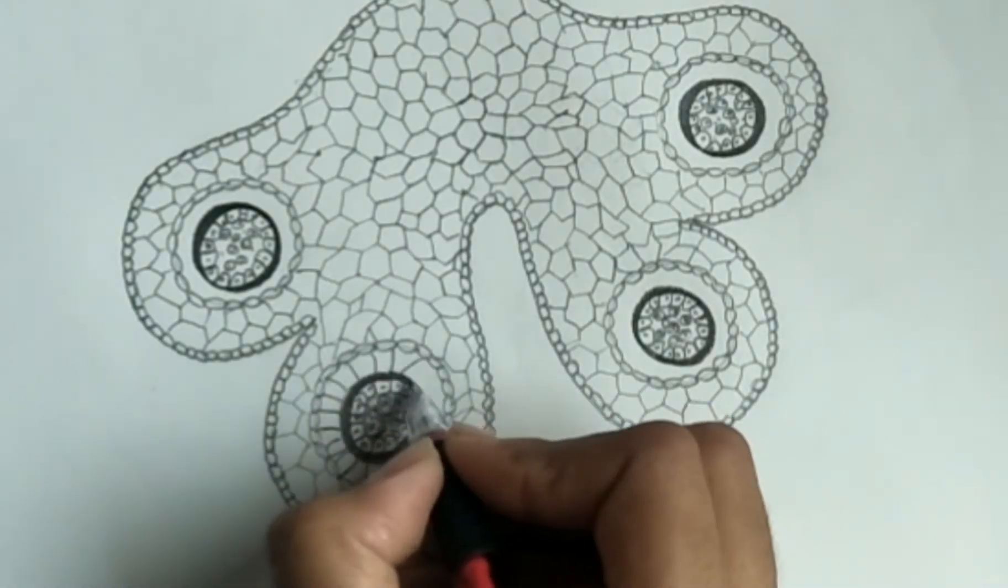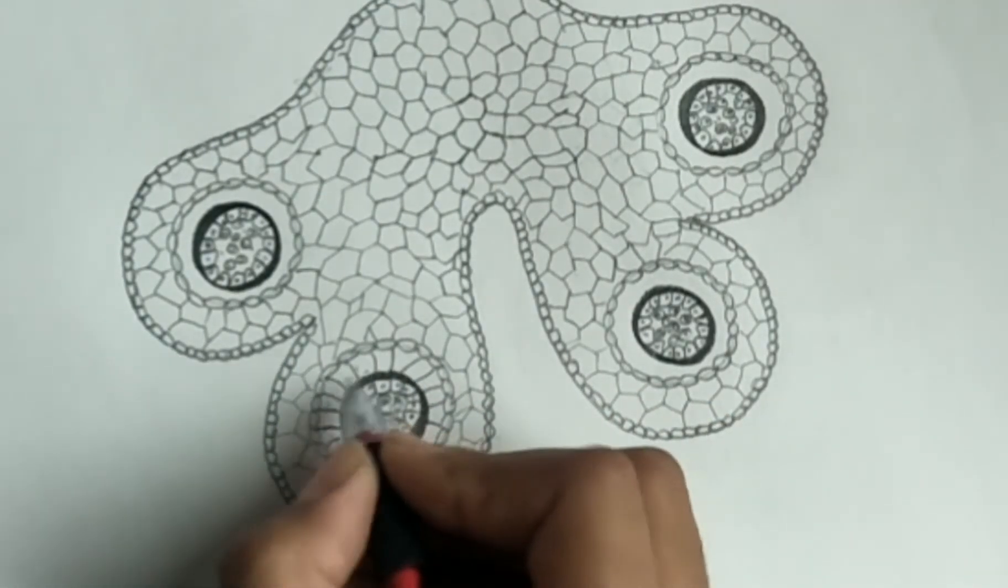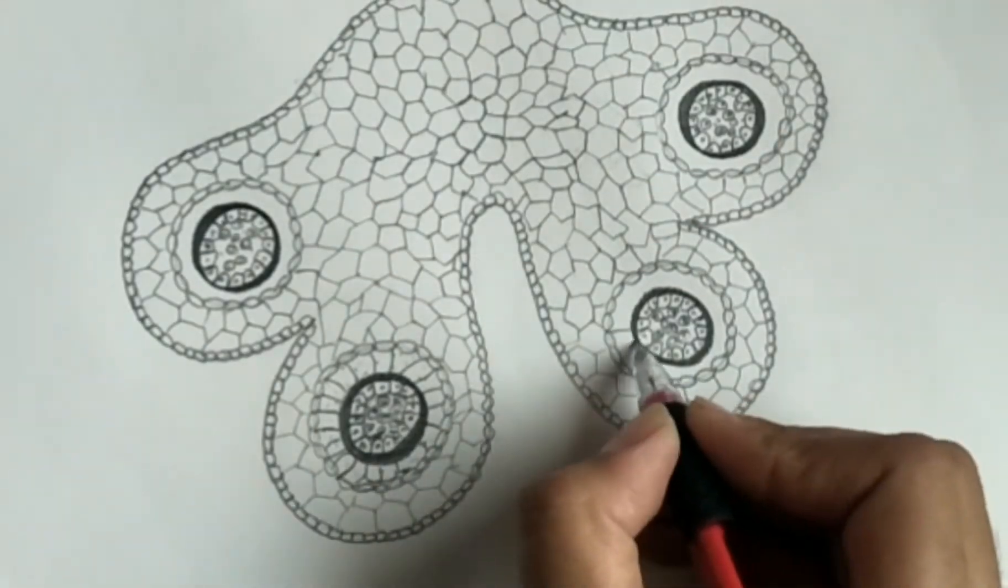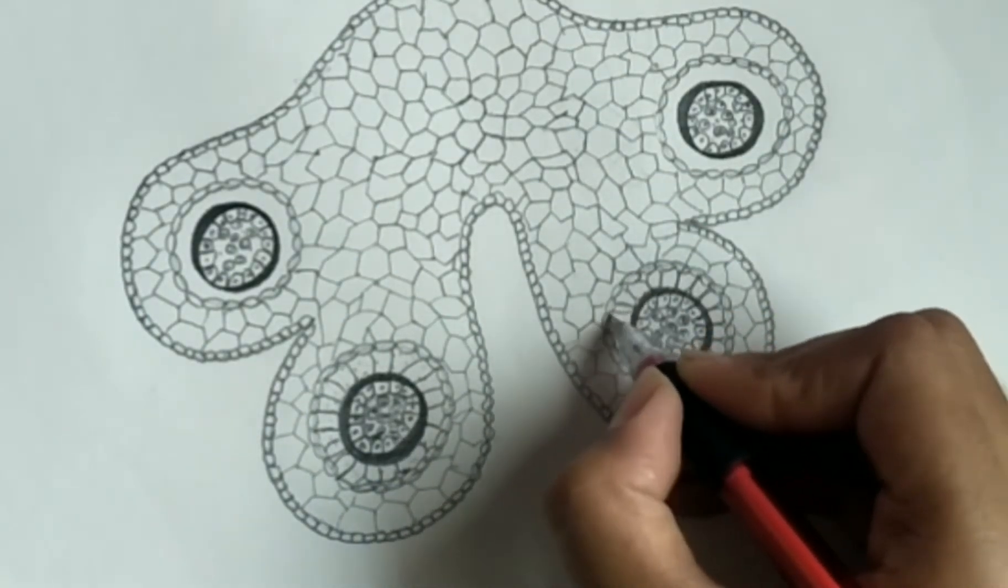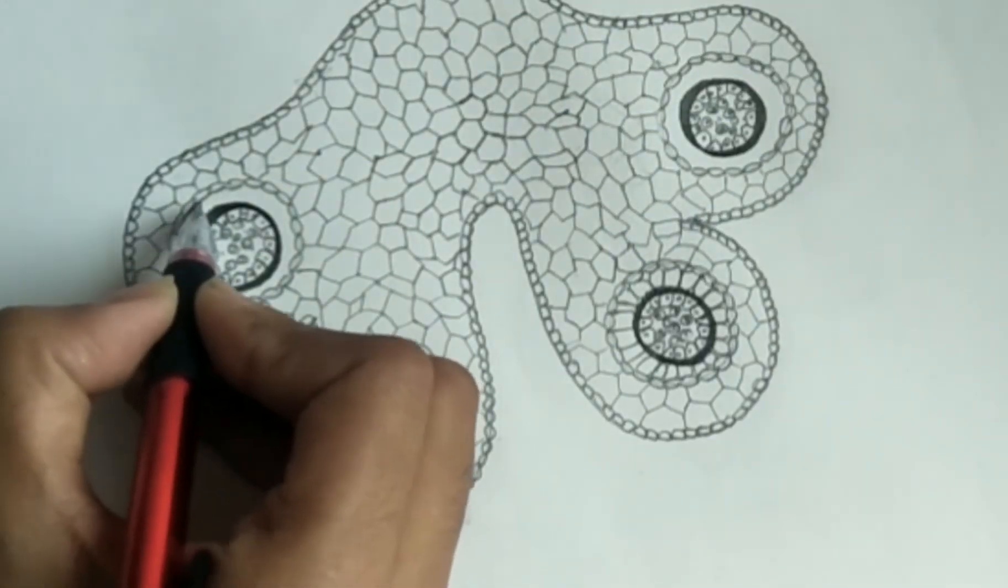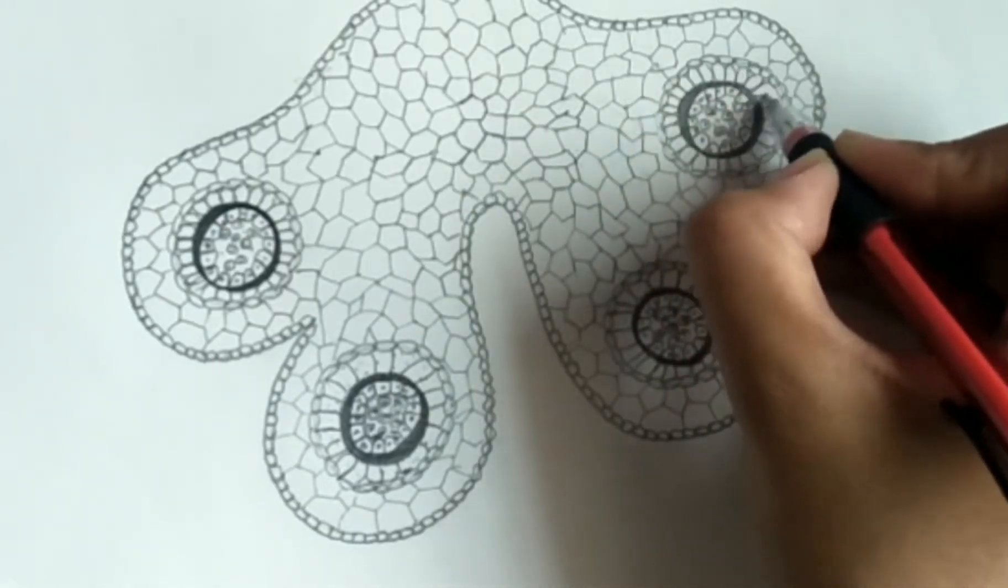Endothecium is the sub-epidermal layer of anther wall which is mostly single layer but may become multilayered. The radial and tangential walls of these cells have characteristic thickening bands. I will start labeling and provide you detailed descriptions.